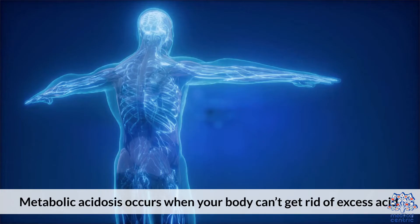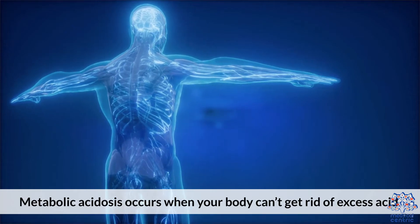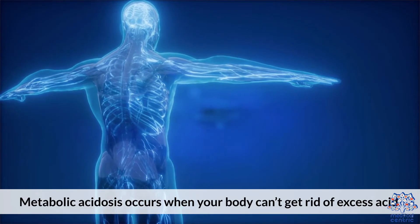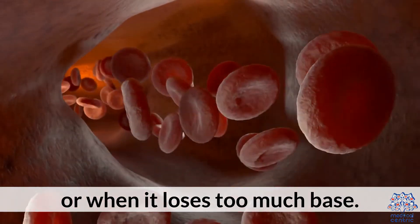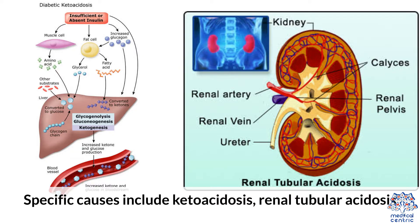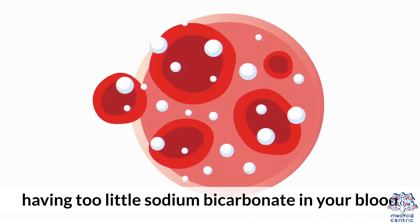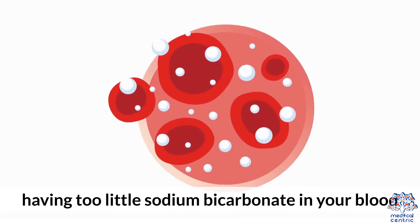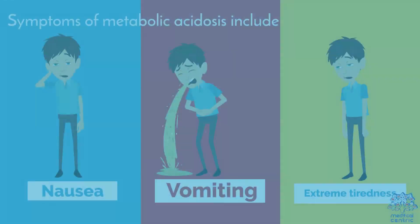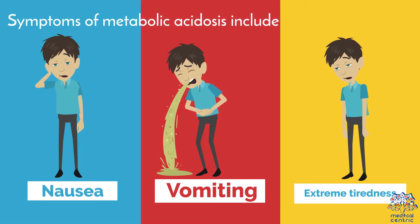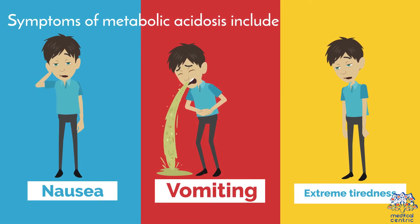Metabolic acidosis. Metabolic acidosis occurs when your body can't get rid of excess acid or when it loses too much base. Specific causes include ketoacidosis, renal tubular acidosis, having too little sodium bicarbonate in your blood, and a buildup of lactic acid. Symptoms of metabolic acidosis include nausea, vomiting, and extreme tiredness.